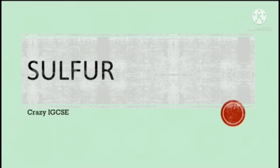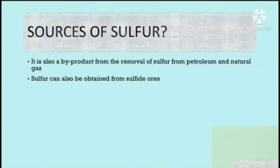Sulfur — Crazy IGCSE. What are the sources of sulfur? It is a byproduct from the removal of sulfur from petroleum and natural gas. It can also be obtained from sulfide ores.